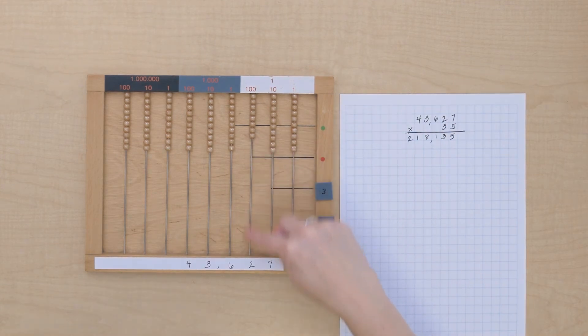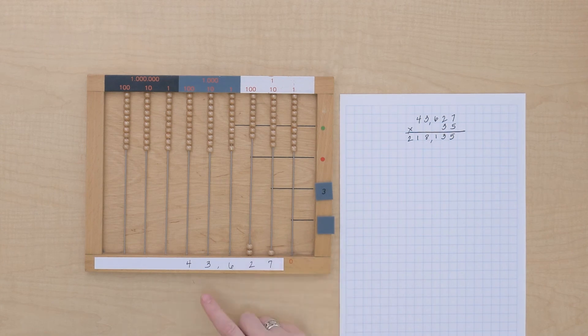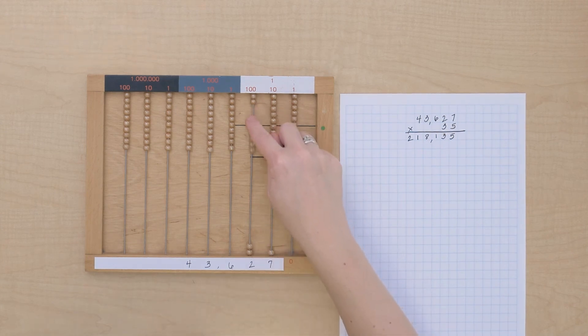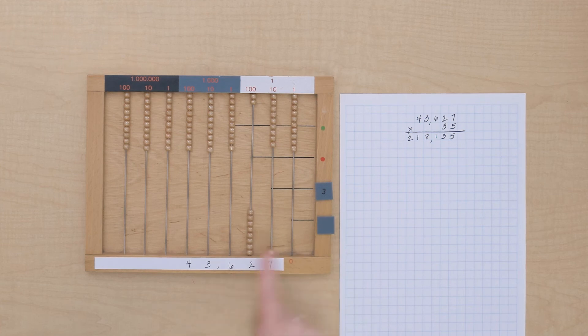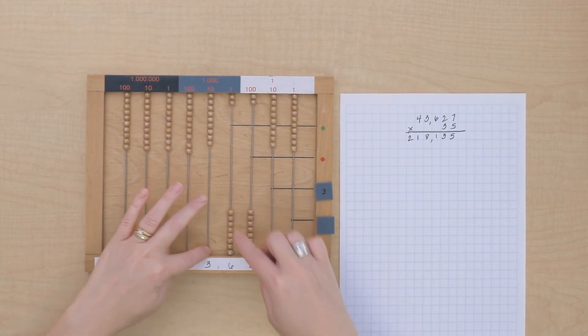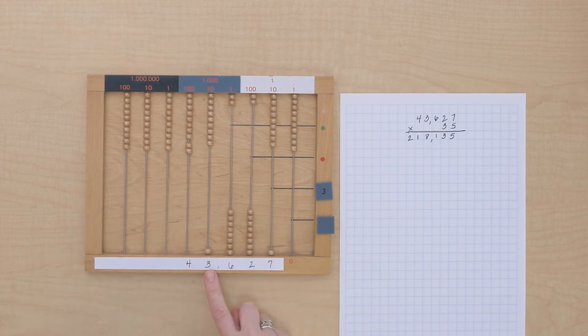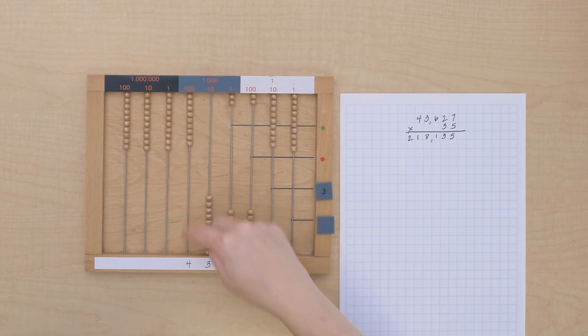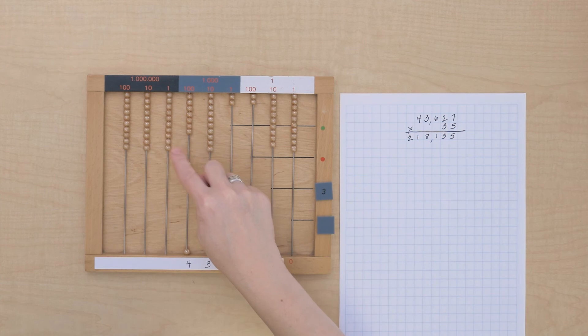7 times 3 is 21 tens. 2 times 3 is 6. 6 times 3 is 18. 3 times 3 is 9. And 4 times 3 is 1,200 thousands.